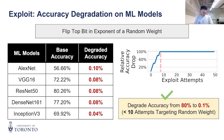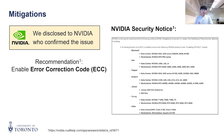We evaluated our exploit against five popular DNN ML models by flipping the top bit in the exponent of random weights. We found that in under 10 attempts, we can degrade model accuracy from 80% to 0%. We responsibly disclosed to NVIDIA, and they confirmed the issue.